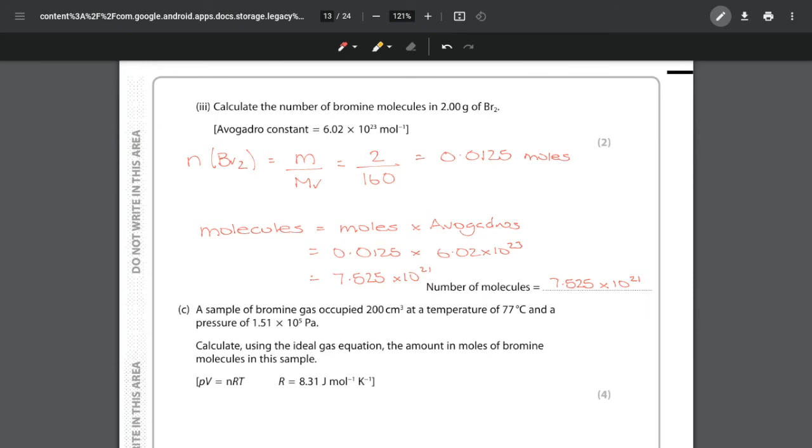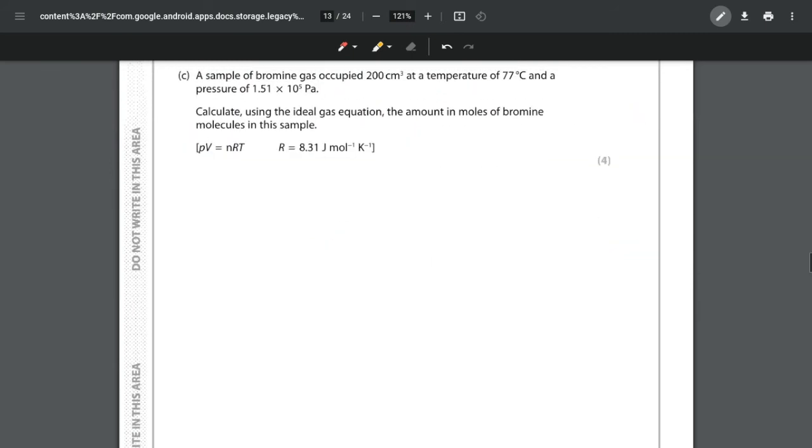For part C, which is the last part of this question, we are looking at an ideal gas equation, so we've got PV = nRT. They give us the gas constant and we're given lots of information: a sample of bromine gas occupied 200 cm³.